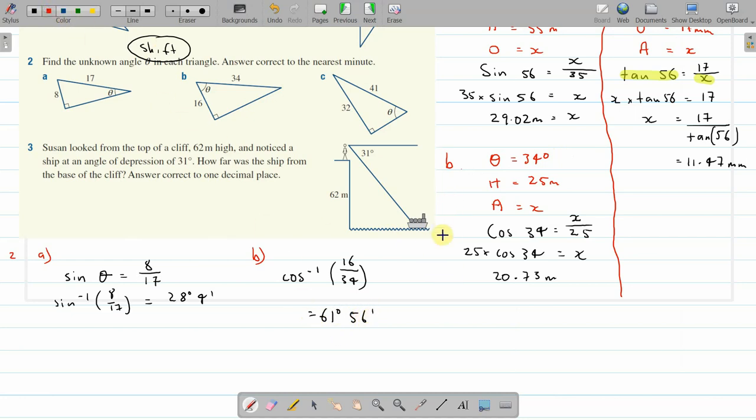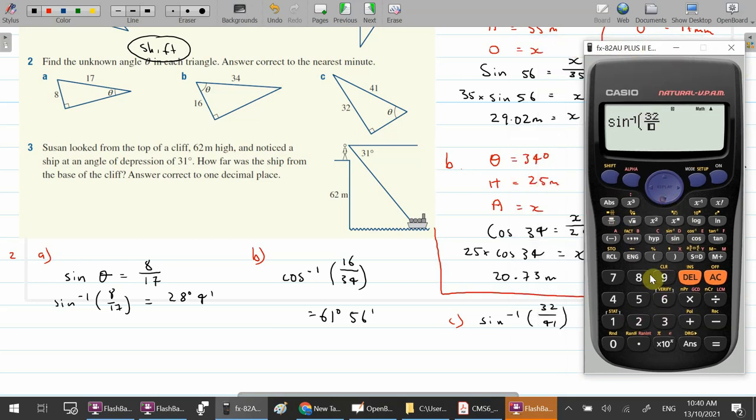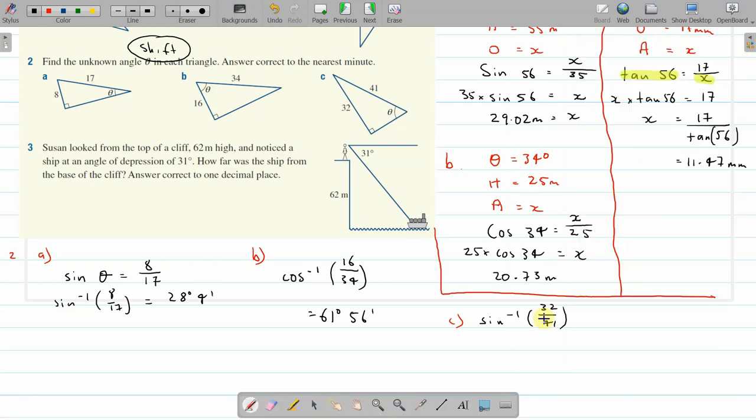2C. Opposite hypotenuse, that's sine. Angle, opposite hypotenuse. Opposite is 32, hypotenuse is 41. Shift, sine, 32 over 41. And degree button. 51 degrees 18 minutes, round it down. Very good, question 3.